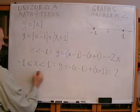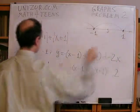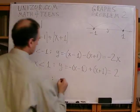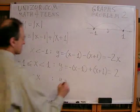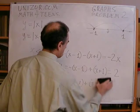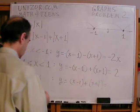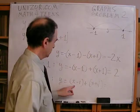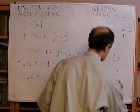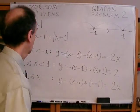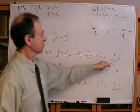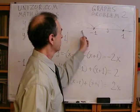On the third interval, x greater than 1: both expressions (x minus 1) and (x plus 1) are positive, so we retain both signs. The function equals (x minus 1) plus (x plus 1), which equals 2x — the minus 1 and plus 1 cancel. So the function on these three segments is: minus 2x, then 2, then 2x.